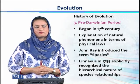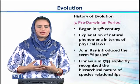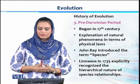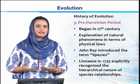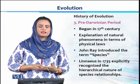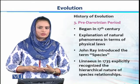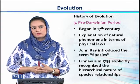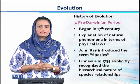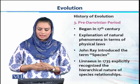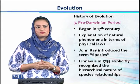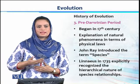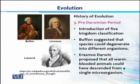The Medieval period was followed by the Pre-Darwinian period, where evolutionists and scientists began looking for more scientific and logical evidences, and started performing different experiments. Beginning in the 17th century, it explained that natural phenomena in our environment are controlled by different physical laws. John Ray introduced the term 'species,' which is the basic term in the study of evolution. In 1735, Linnaeus, a prominent taxonomist, explicitly recognized the hierarchical nature of different species.